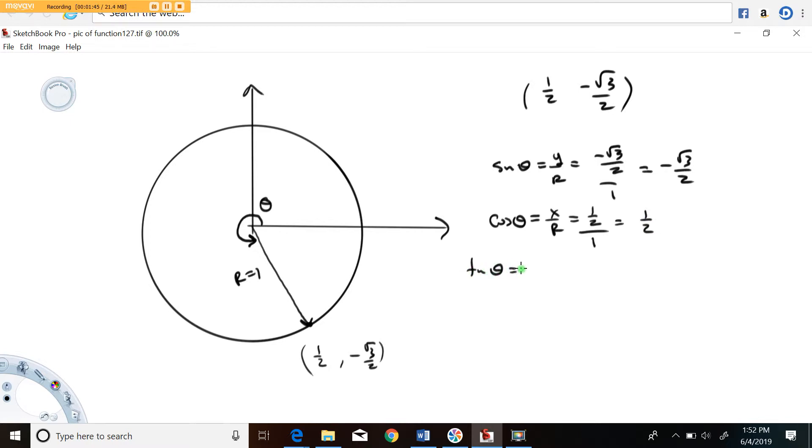The tangent function is y over x. That's going to be this over this. Minus root three over two over one half. These twos are going to cancel. Minus root three, I believe, comes out of that.